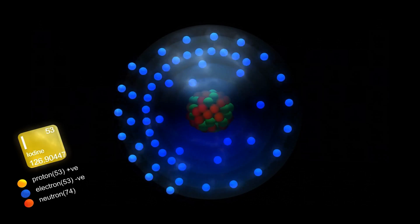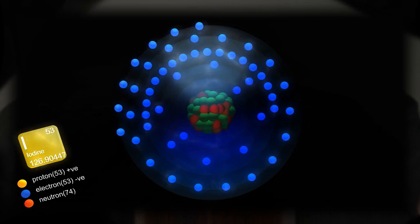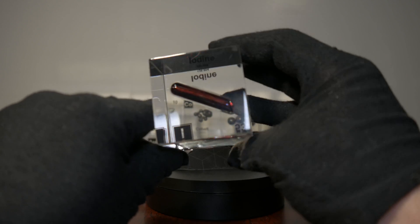Iodine has 53 protons and 53 electrons, and only one stable isotope: Iodine-127.